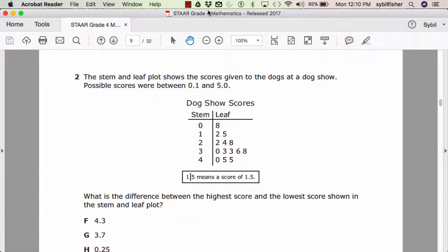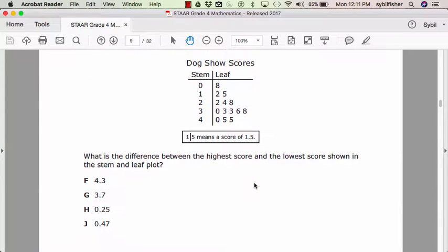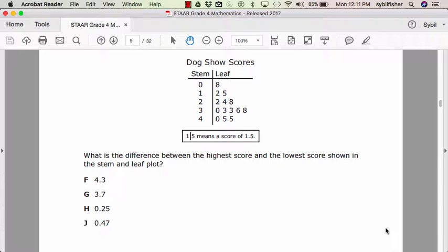Number 2. The stem and leaf plot shows the scores given to the dogs at a dog show. Possible scores were between 0.1 and 5.0. Dog show scores. Stem, leaf. Stem 0, leaf 8. Stem 1, leaf 2, and 5.0. One line 5 means a score of 1.5. What is the difference between the highest score and the lowest score shown in the stem and leaf plot? F, 4.3. G, 3.7. H, 0.25. J, 0.87.